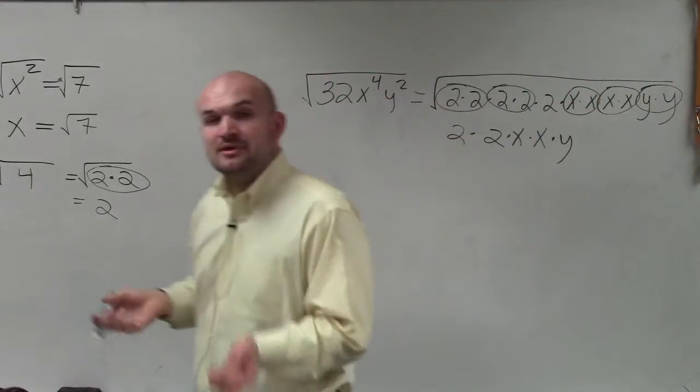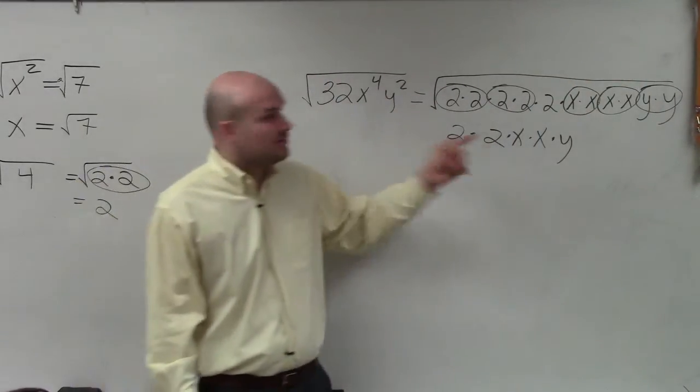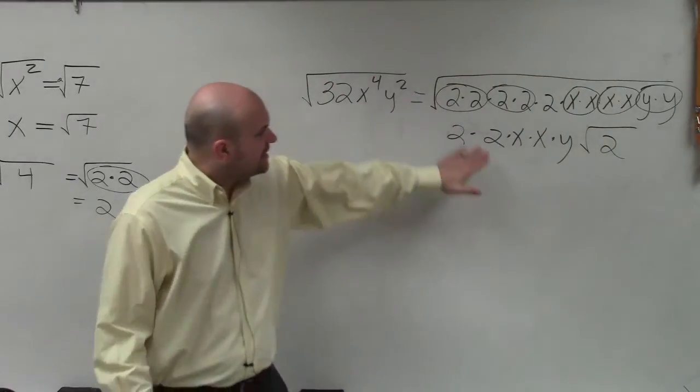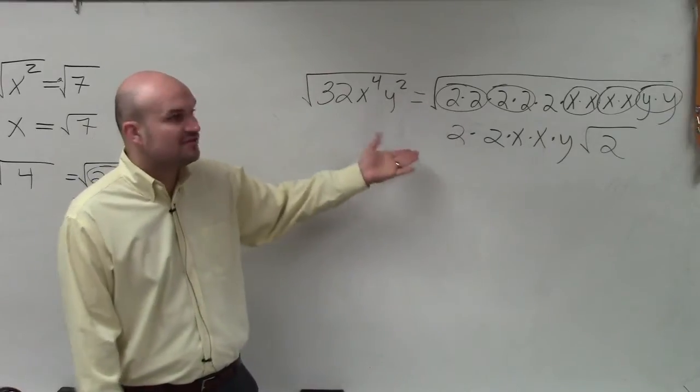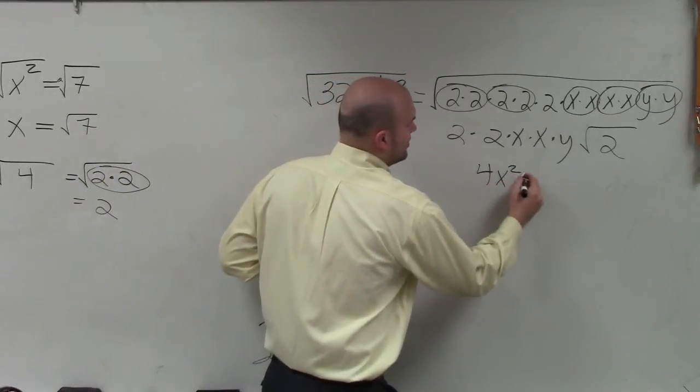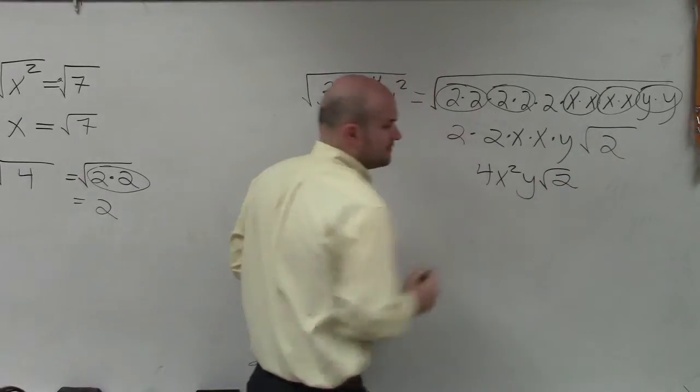Then we look at what else I could not take the square root of - that's 2. So that's going to have to remain under the root. Then I just look at this and say, well, 2 times 2 is 4, x times x is x squared. So my final answer is 4x²y times the square root of 2.